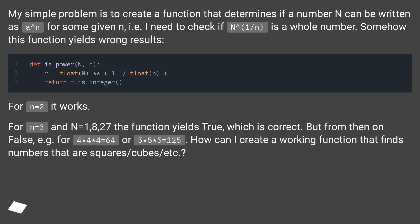For n=2 it works. For n=3 and n=1,8,27 the function yields true, which is correct. But from then on false, for example for 4×4×4=64 or 5×5×5=125. How can I create a working function that finds numbers that are squares, cubes, etc?